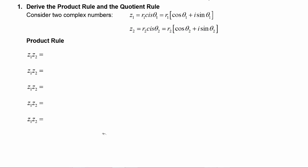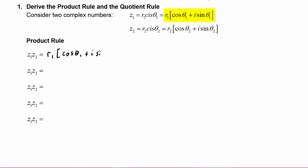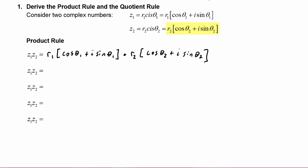To develop the product rule, let's take these two complex numbers and multiply them together. So we have r1 times the quantity cosine θ1 plus i sine θ1, times r2 times the quantity cosine θ2 plus i sine θ2. We can take r1 times r2 and put that out front.